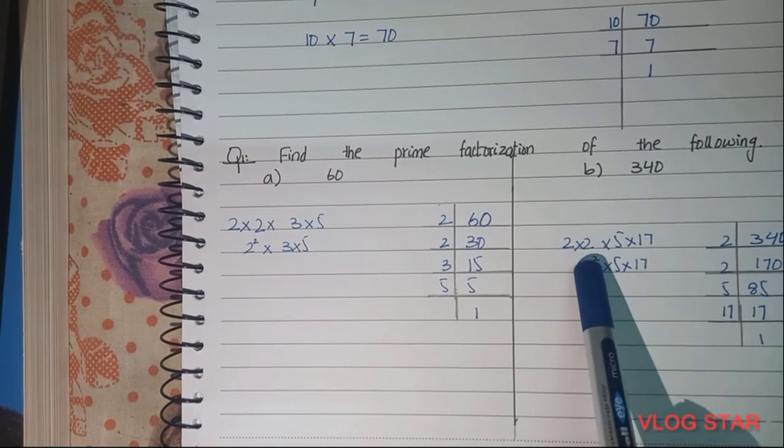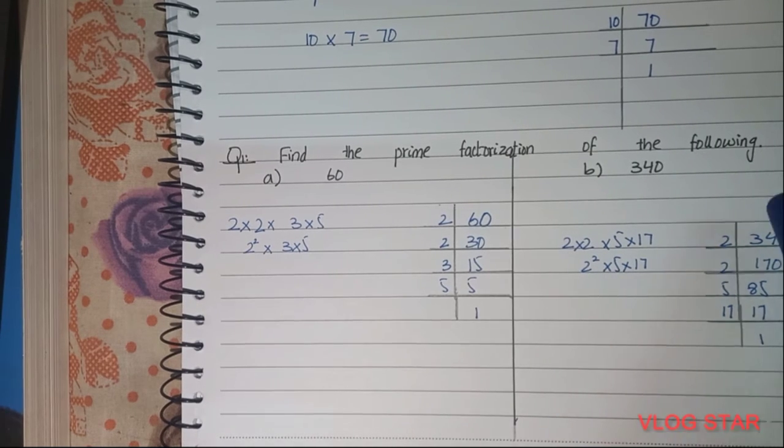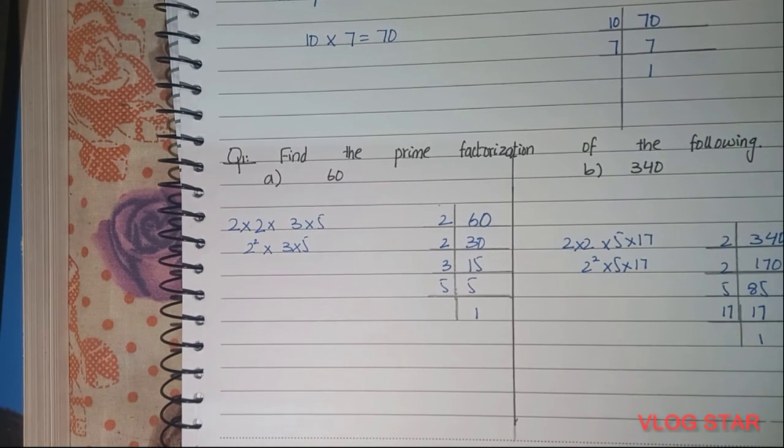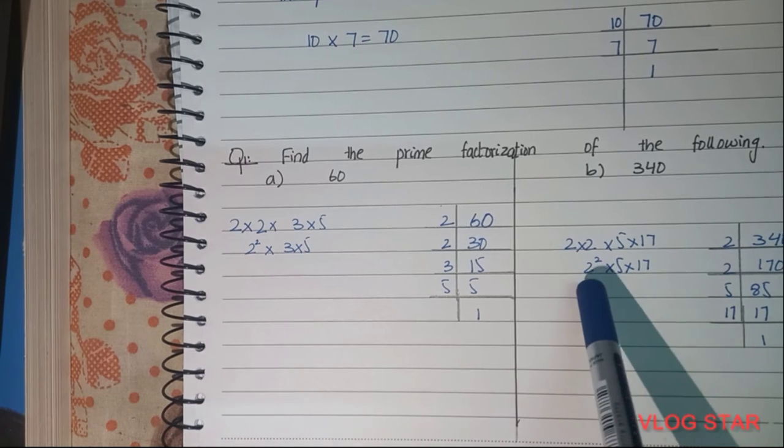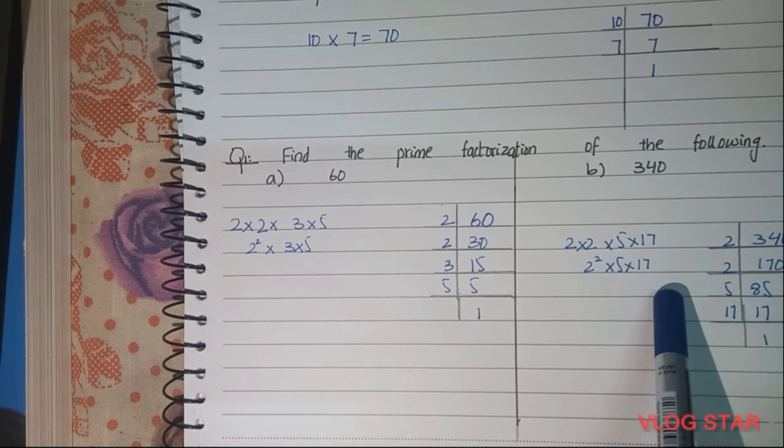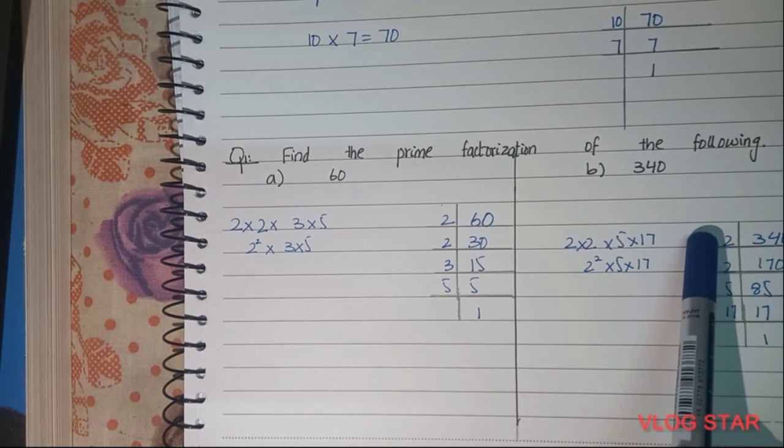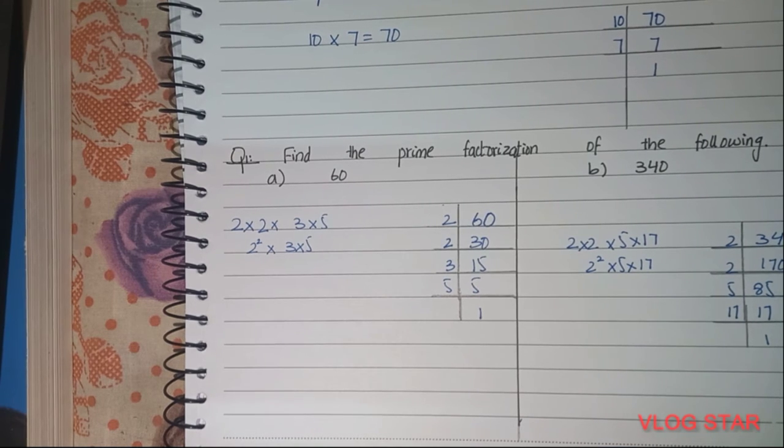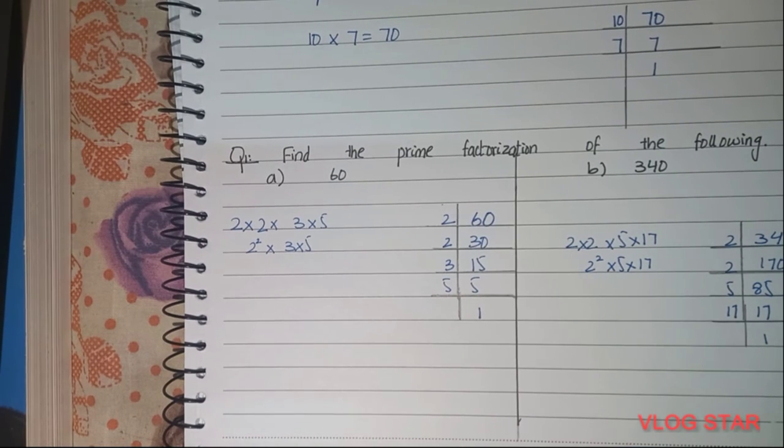To write it in index notation, we do 2 × 2 × 5 × 17, which makes 340. And to write it in a more simplified way: 2² × 5 × 17 = 340. That's the same thing but in simplified form.